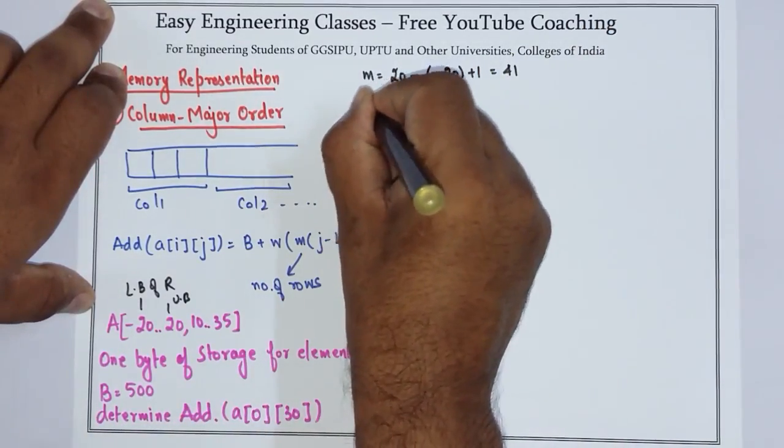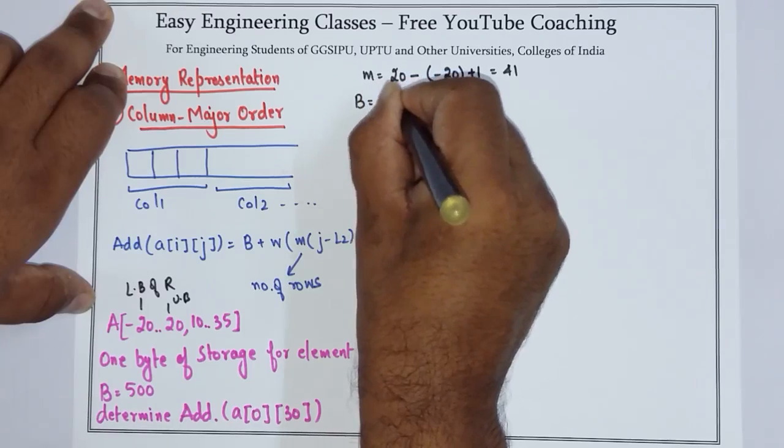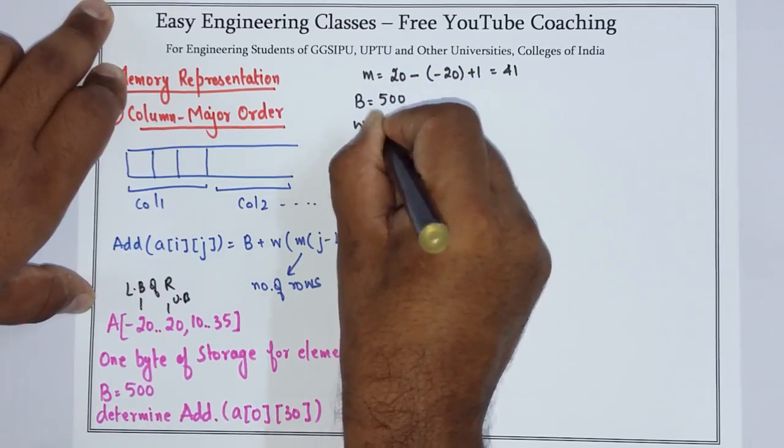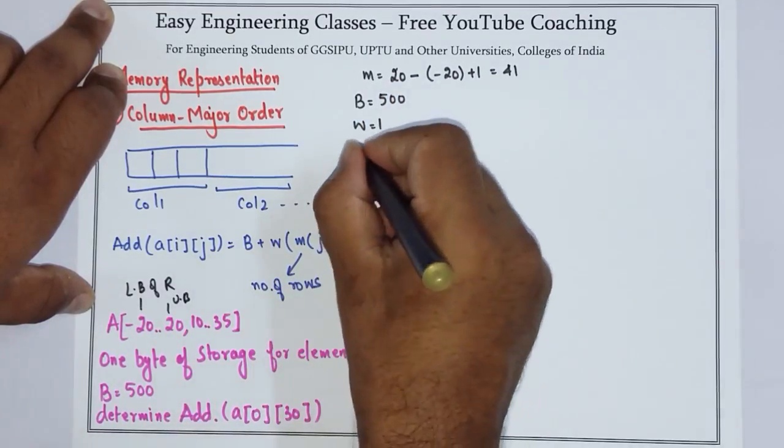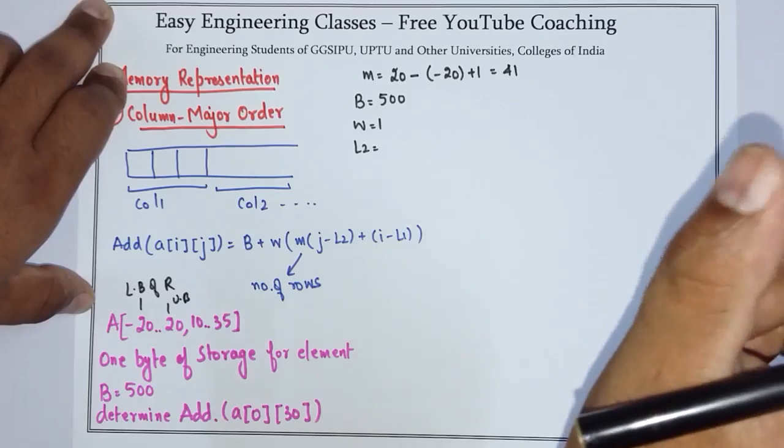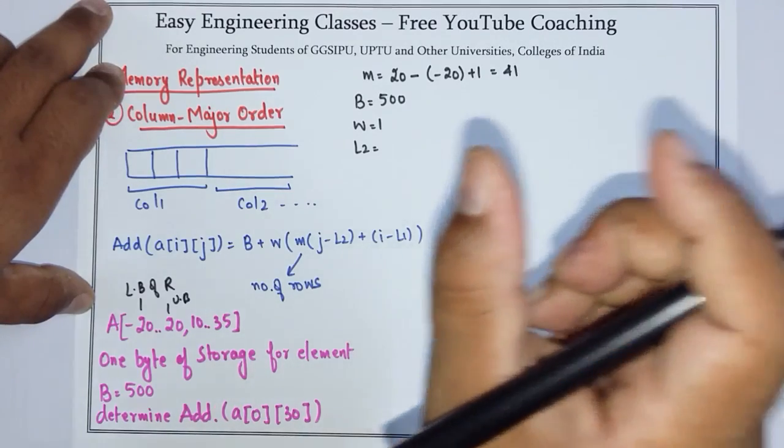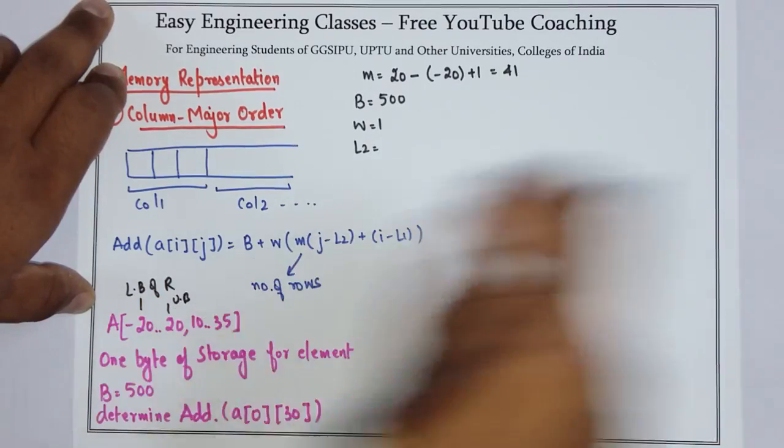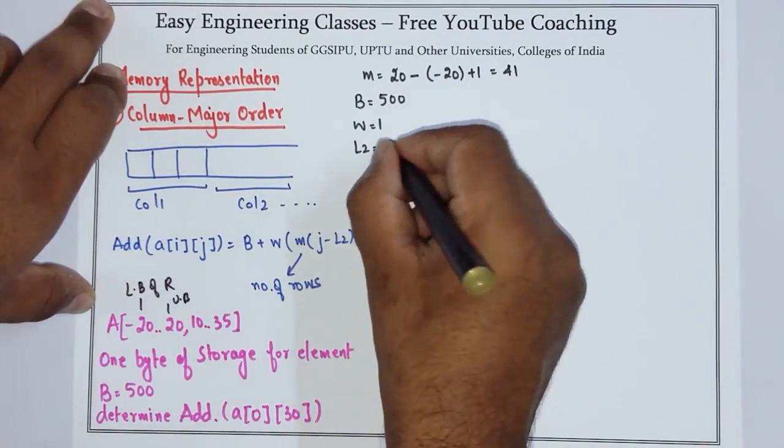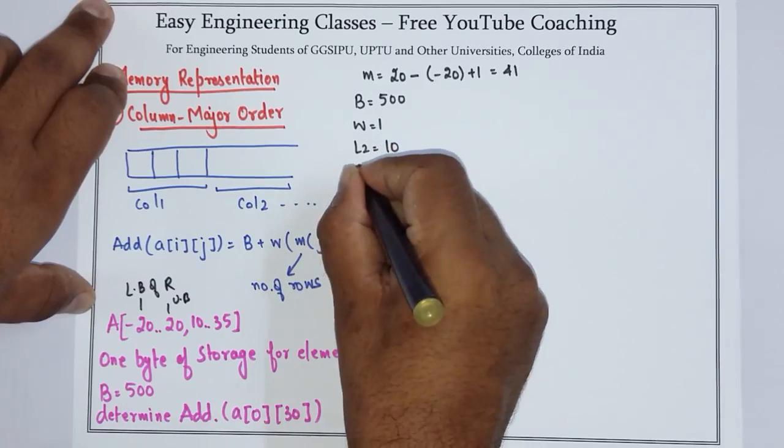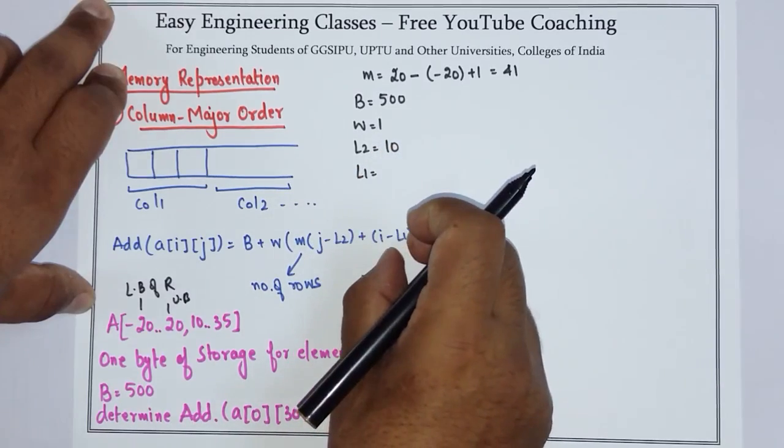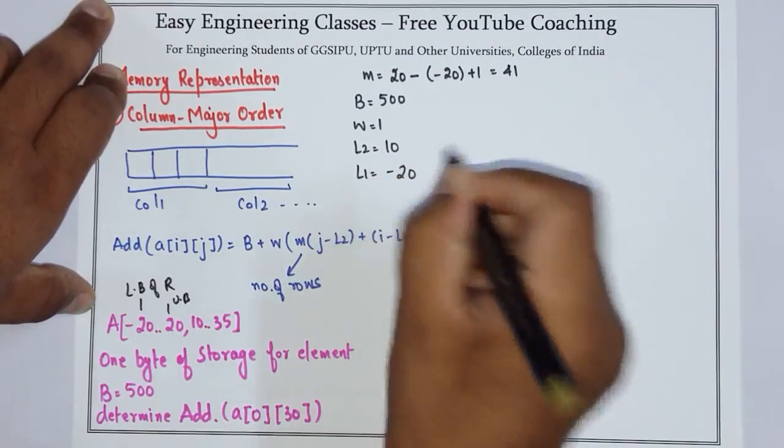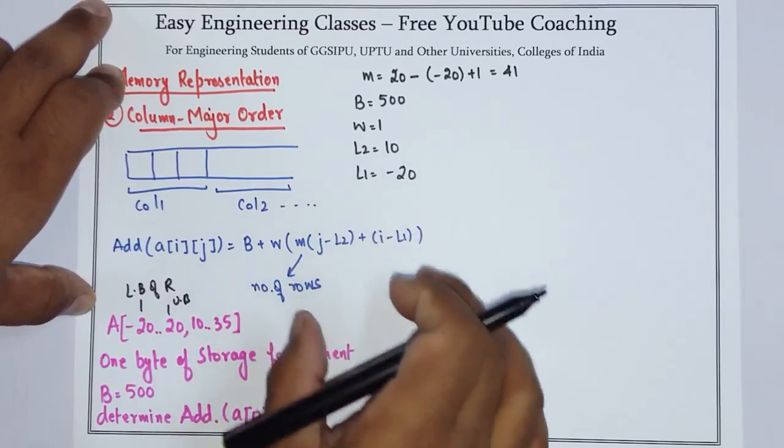Base is given as 500, w is given as 1. What is l2? l2 is the lower bound of column, and the lower bound of column is 10, so l2 is 10. l1 is lower bound of row which is -20. So now we have all the values.